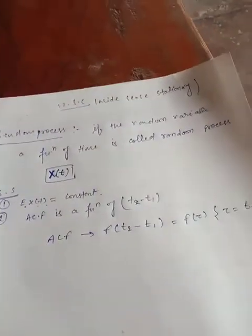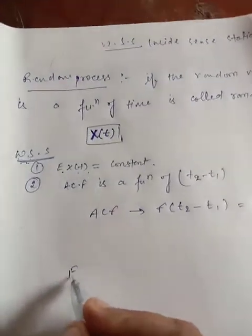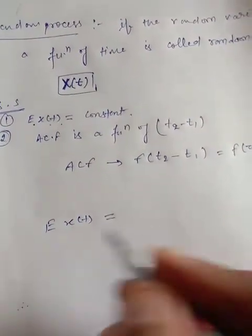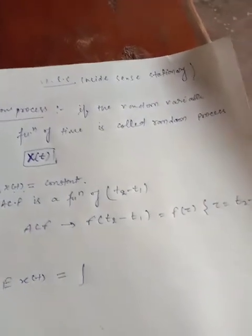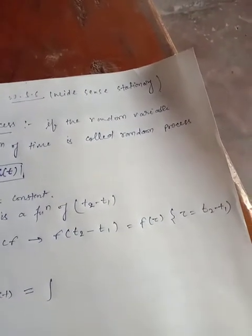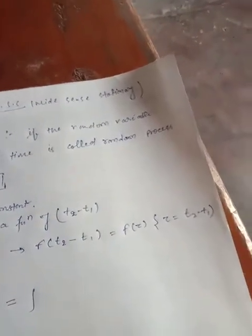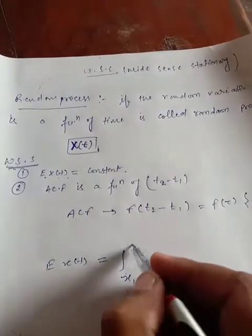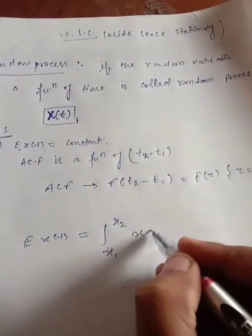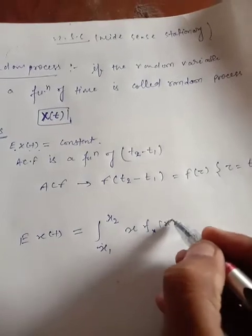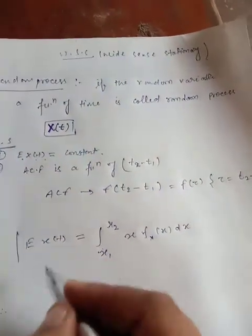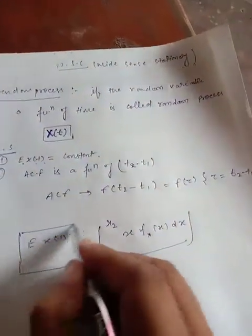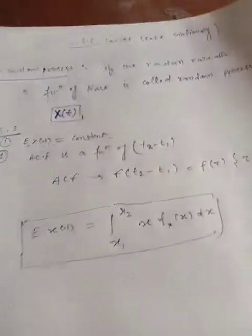The expectation of x(t) is defined as the time integral: E[x(t)] = integral from x1 to x2 of x times the PDF dx. This is called the expectation of x(t).